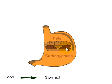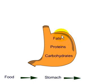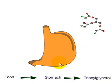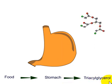So we eat food, and that food contains fat, proteins, and carbohydrates. We digest it, and in the case of fat, we produce triglycerides in the stomach.